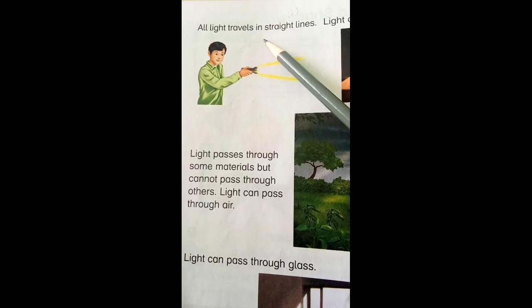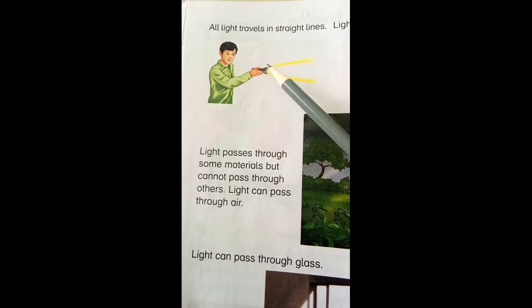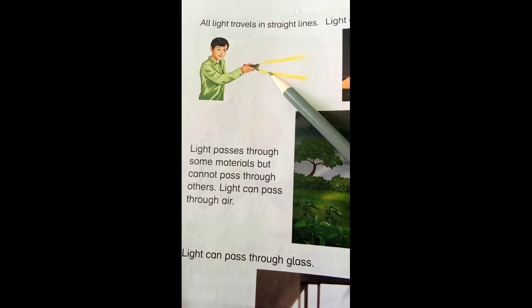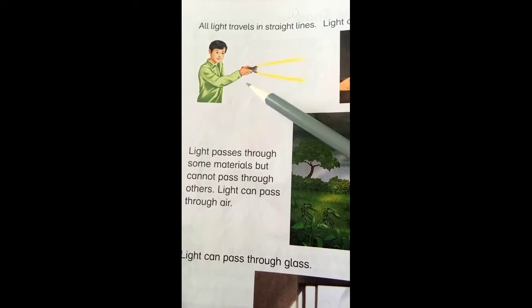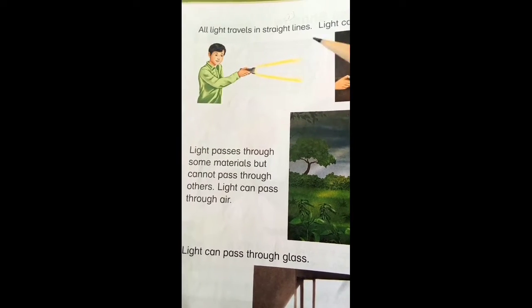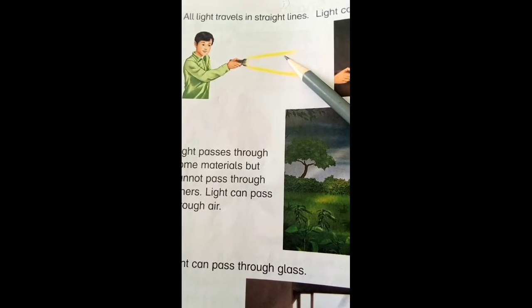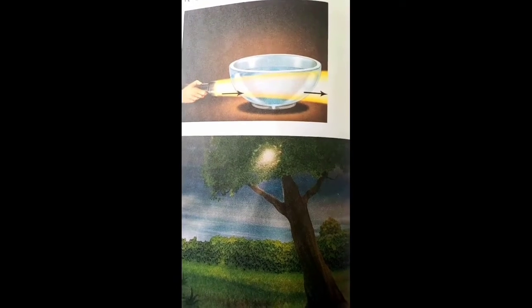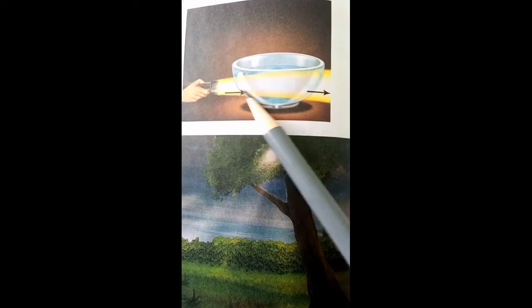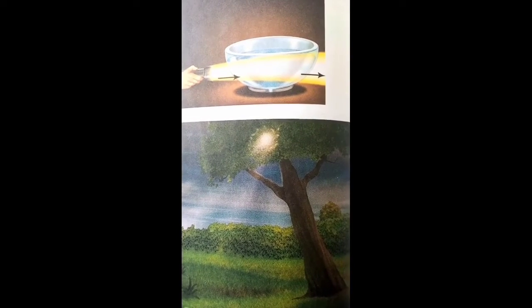All light travels in straight lines — jitni bhi lights hain wo travel karti hain in a straight line. Light kabhi zig-zag mein ya twist mein nahi travel karti. Light always travels in a straight line, bilkul seedhi seedhi straight line mein.